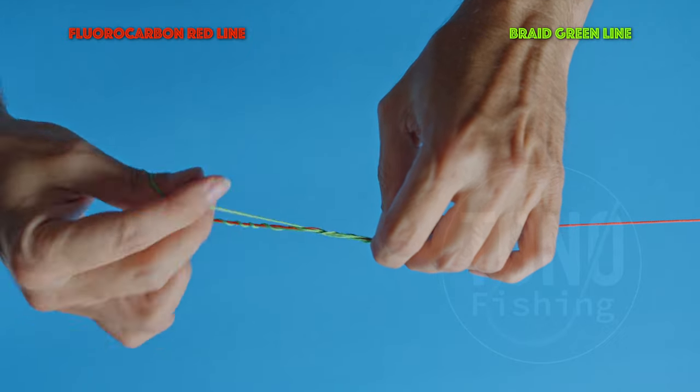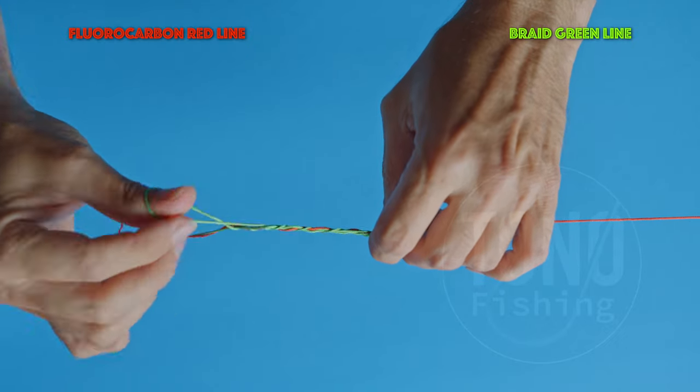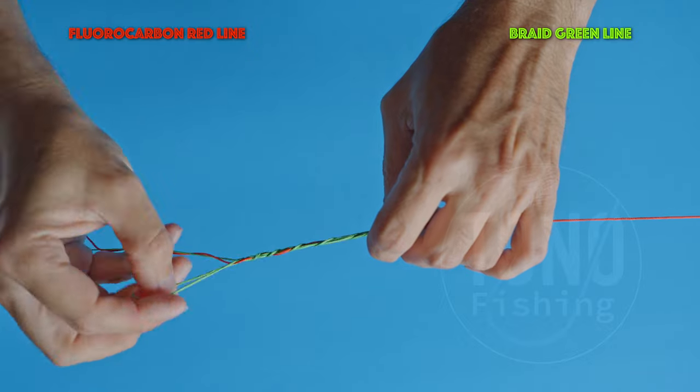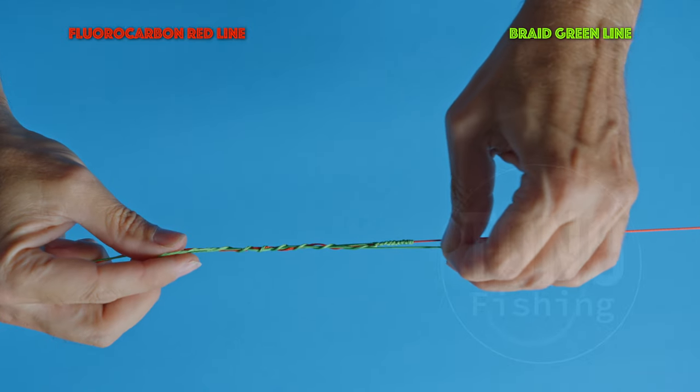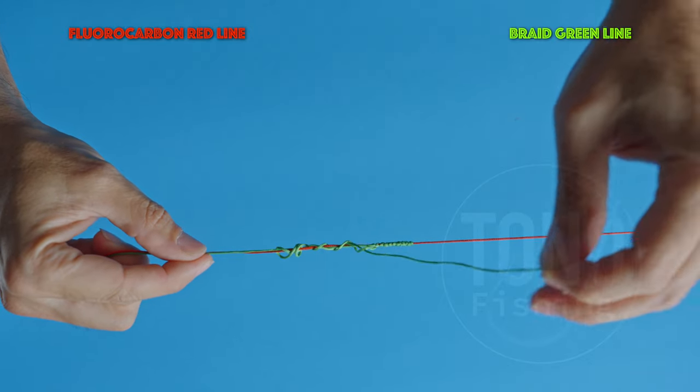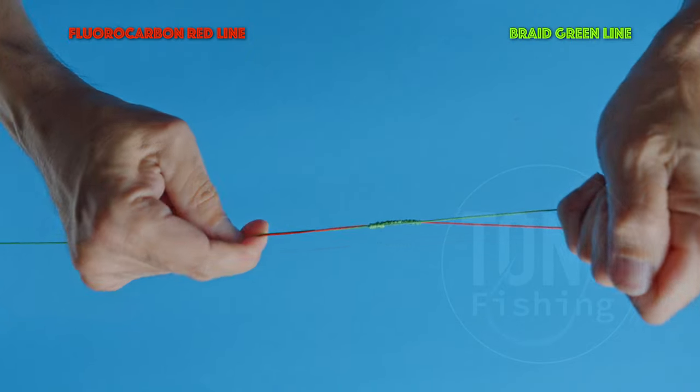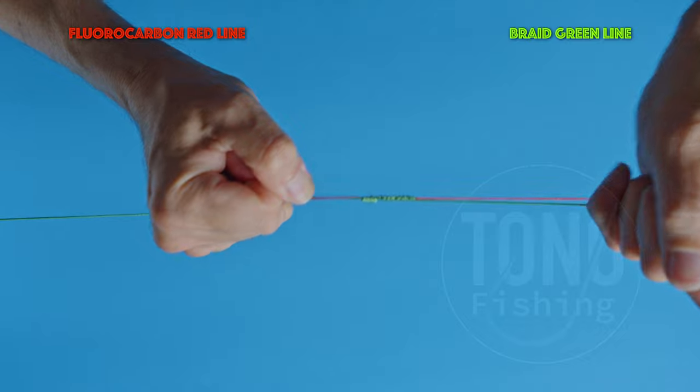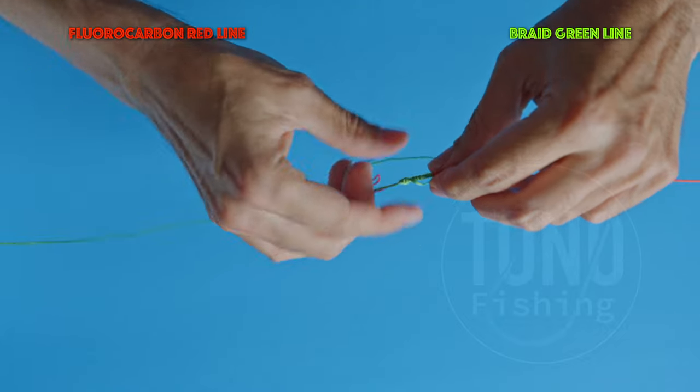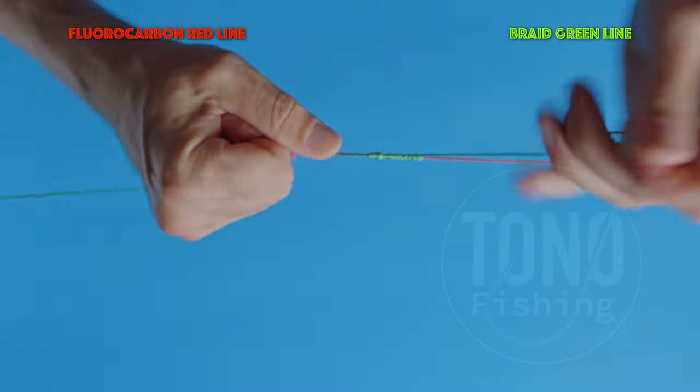With your right hand, start turning the braid loop 7 times, in the same clockwise direction as before. Gently pull downward from the braid tail until the knot tightens completely, and you'll notice a small cone shape. Finally, you can cut the fluorocarbon tail as close to the knot as you prefer, because our final knot is secure.